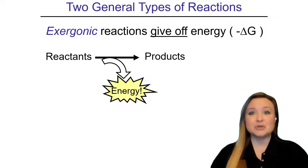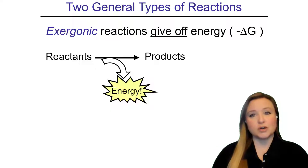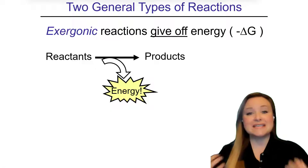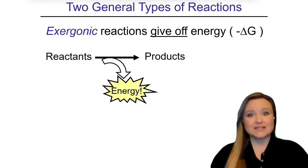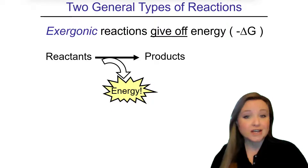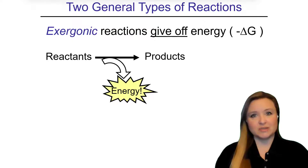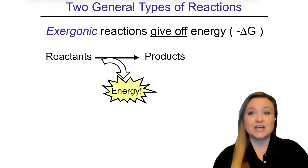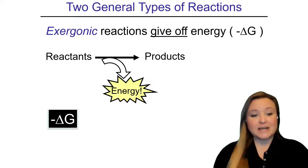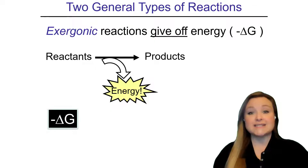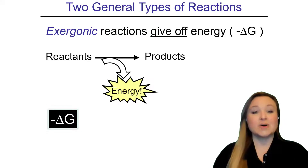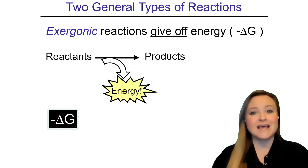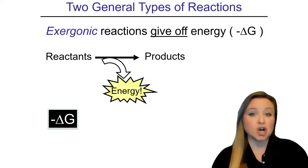I'll summarize that quickly here, but do use the link above for a more thorough explanation to refresh your memory or to work through some practice questions. Exergonic reactions give off free energy, so they have a negative delta G. The reactants react with each other to form products, and energy is released in the process — that free energy can be used to do work. The delta G is negative because there's more free energy in the reactants than in the products, which is why this is an exergonic reaction.